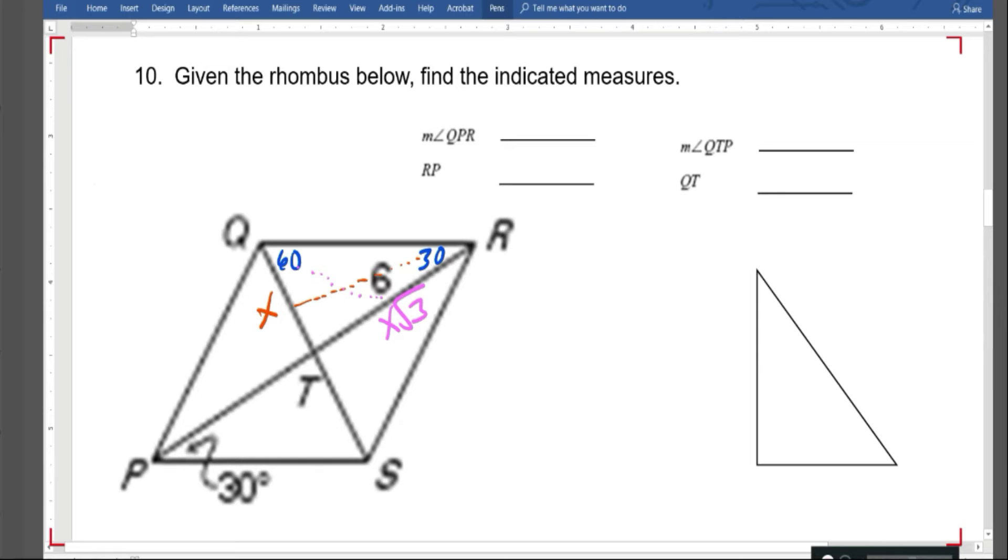So to go from 6, or to go from x root 3 to x, you simply have to divide by root 3. Use your calculator. So 6 divided by root 3 is 2 root 3. That means this side right here is 2 root 3.